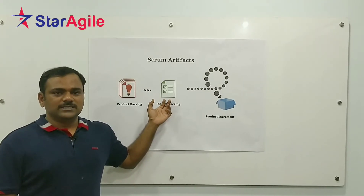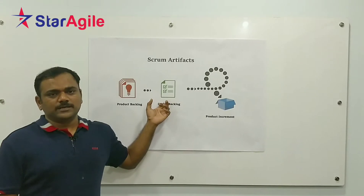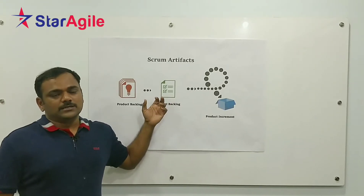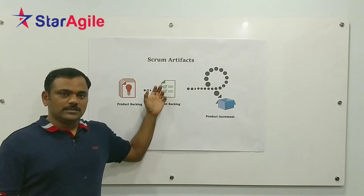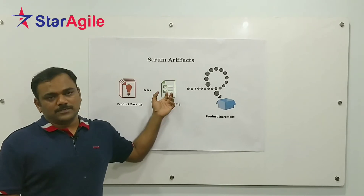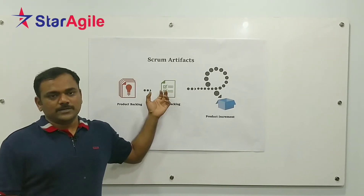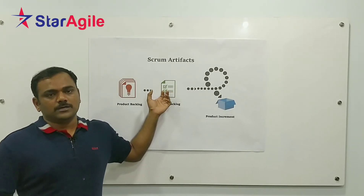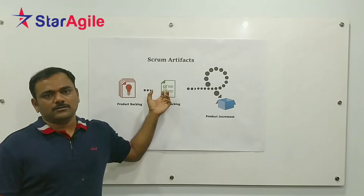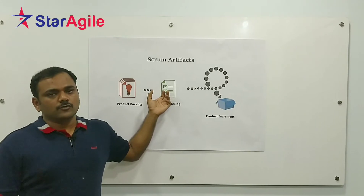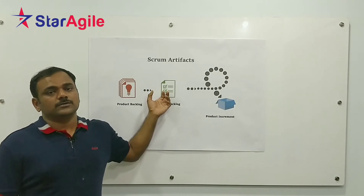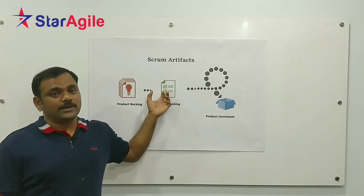The Sprint Backlog can change throughout the sprint, whereas the goal is fixed. How the team is going to achieve that goal can change. Part of the sprint backlog — the 'how' part — can change, and it's up to the development team to decide and do whatever is required to achieve the goal they built upon with the Product Owner during sprint planning.